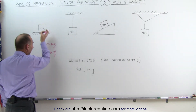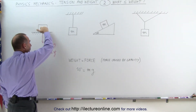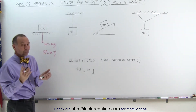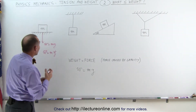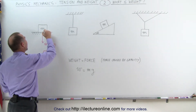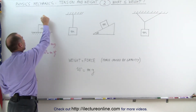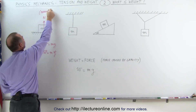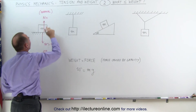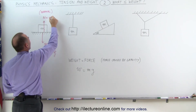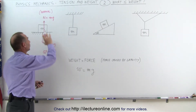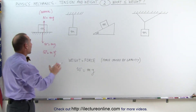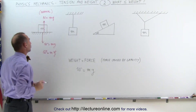Since the earth is pulling down on the object, the weight will be pressing up against the floor or the ground, and the ground will be pushing back. Newton's third law says for every action there is a reaction. There will be a reactionary force called the normal force — normal to the surface — equal in magnitude to the weight of the object. Since those two forces are equal in magnitude and opposite in direction, they cancel each other out and there is no acceleration; the object just sits there.